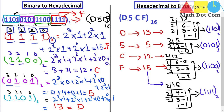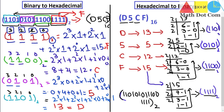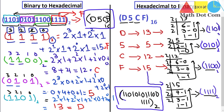We have got the binary equivalent of all 4 hexadecimal digits. Now we combine them: D is replaced by 1101, 5 by 0101, C by 1100, and F by 1111. So the binary equivalent of the hexadecimal number D5CF is 1101 0101 1100 1111. This is how we can convert binary to hexadecimal and hexadecimal to binary.